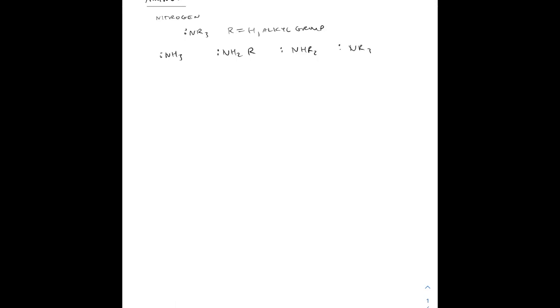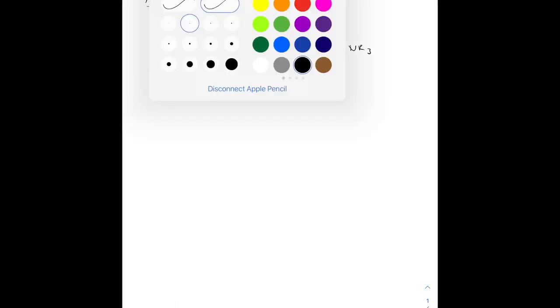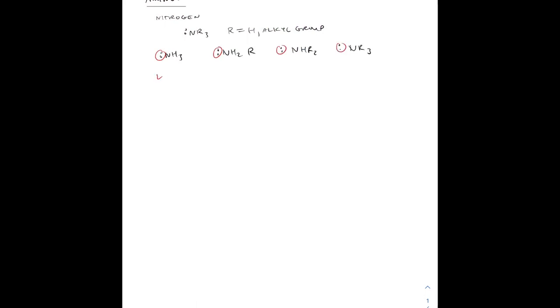We're talking about amines today. Amines are just nitrogen-containing compounds, typically NR3, where R is equal to a hydrogen or alkyl group. There can be other things, but those are the main ones. We've got our groups here — ammonia, a primary, secondary, and tertiary amine, just like alcohols. And that lone pair on there means that it's going to be basic and nucleophilic.